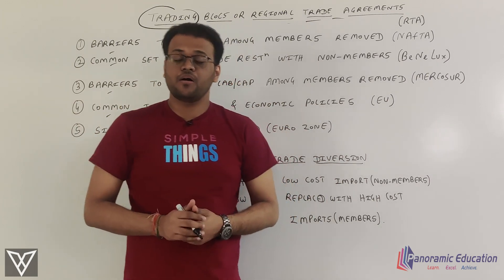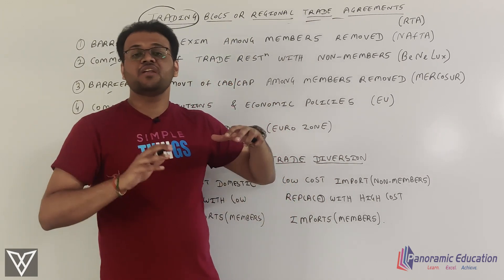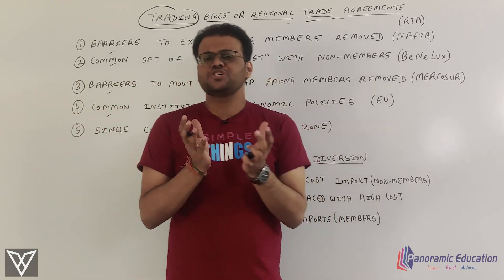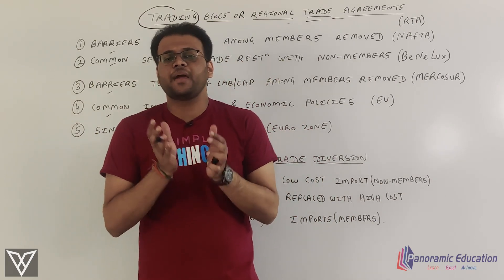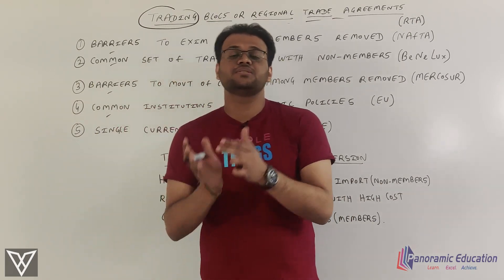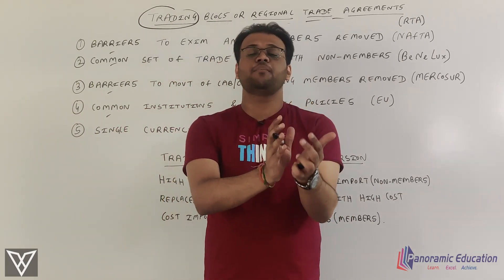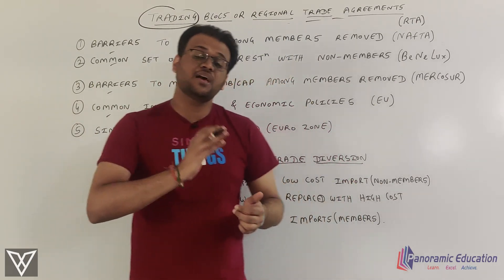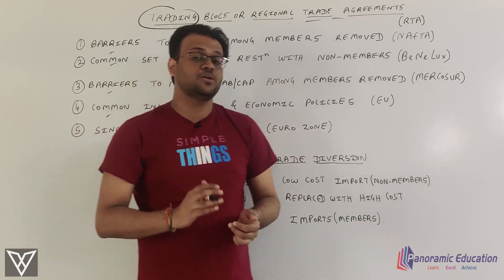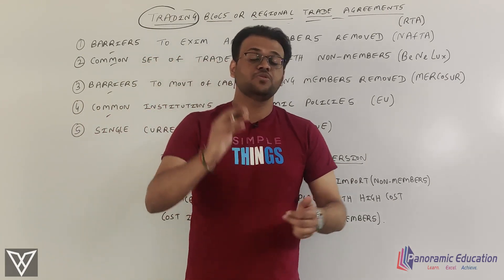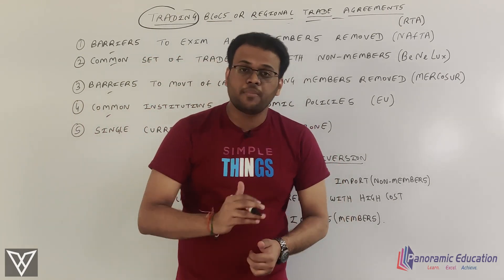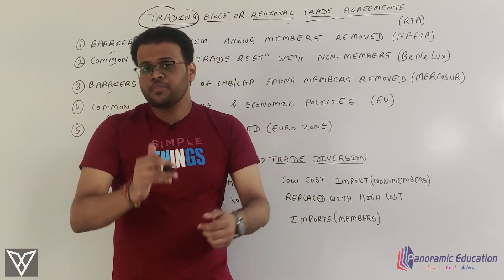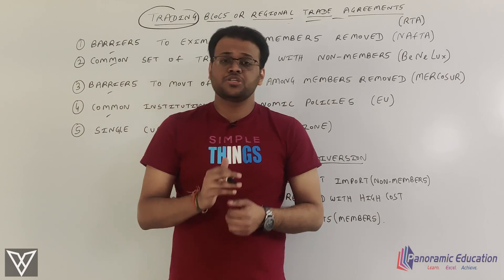Starting from the free trade agreement, you can remove many restrictions with the member countries. As you move to customs union, common market, economic union, monetary union, the agreement becomes progressively stricter, with more clauses added.